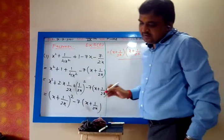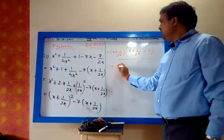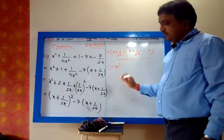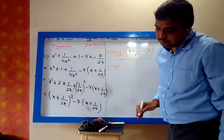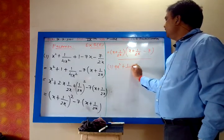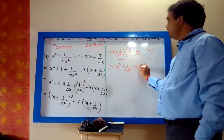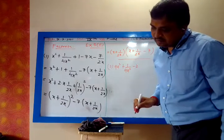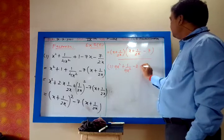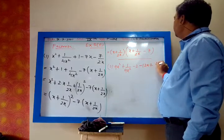Now the second problem: 9a² + 1/(9a²) minus 2 minus 12a + 4/(3a).